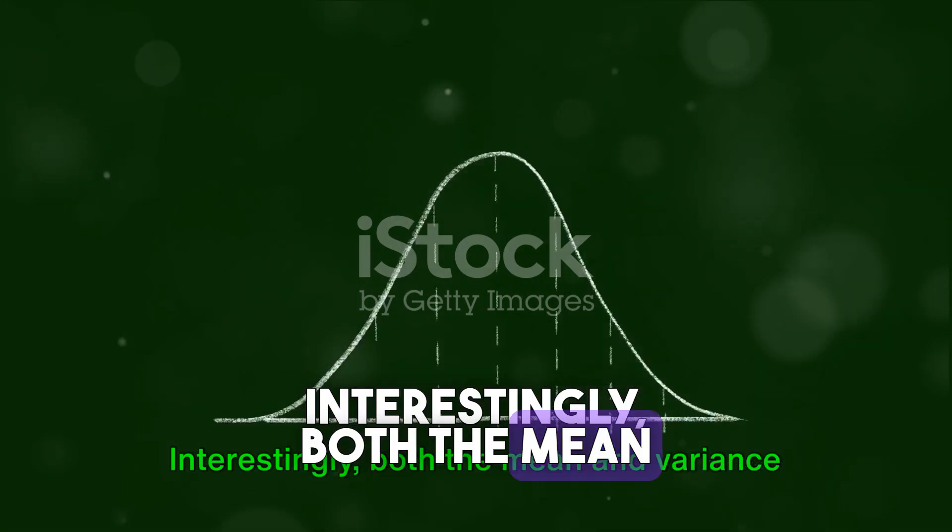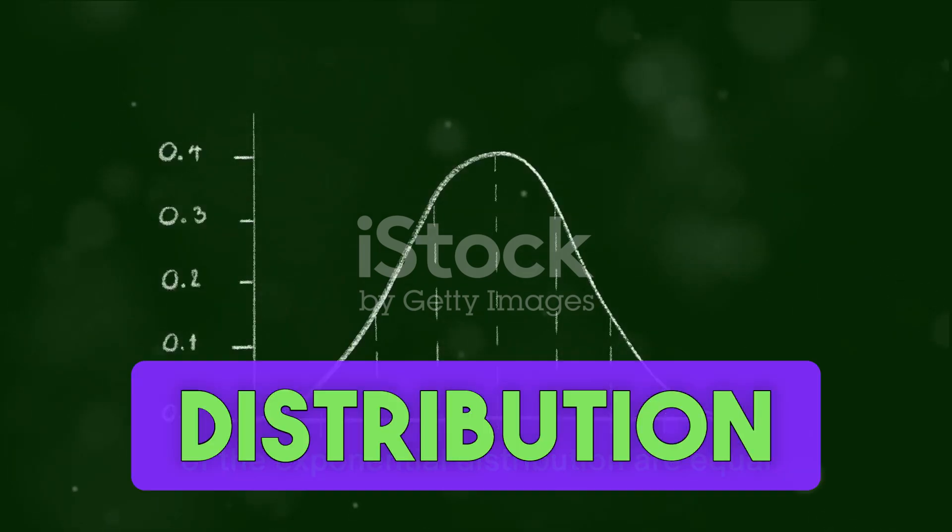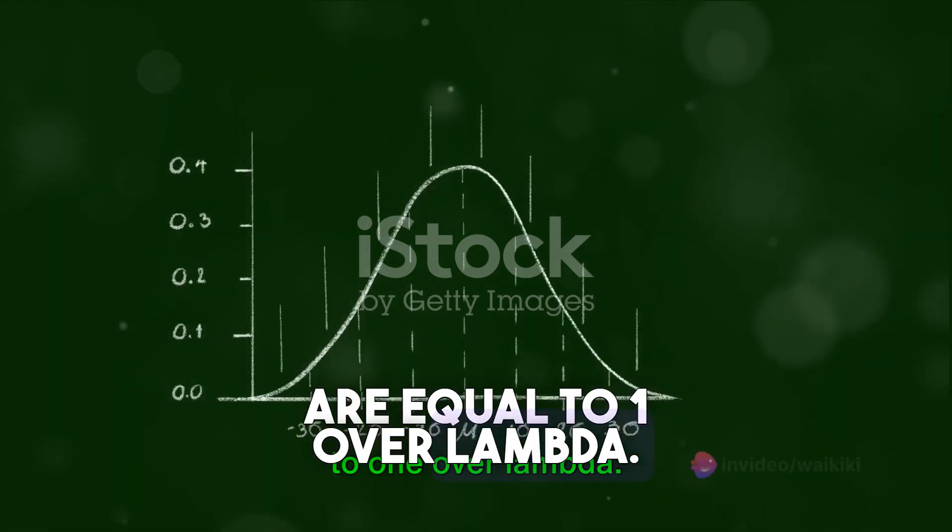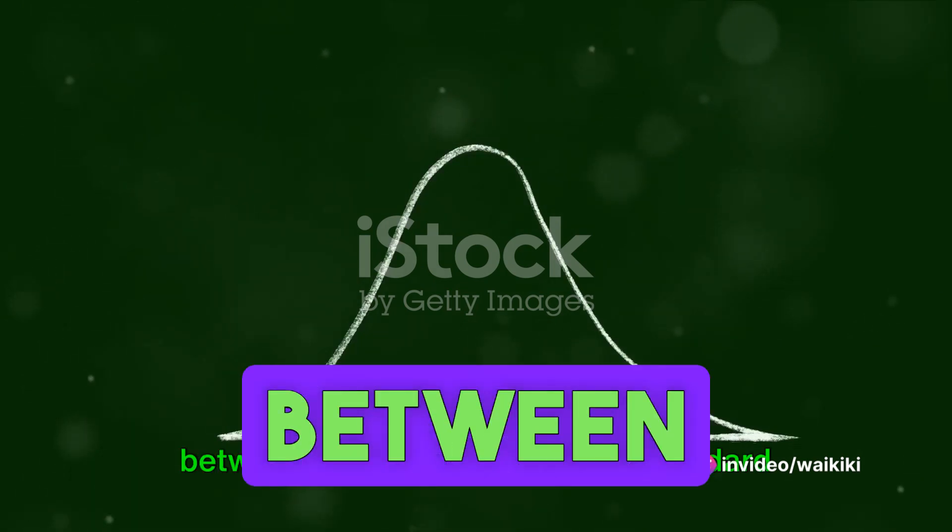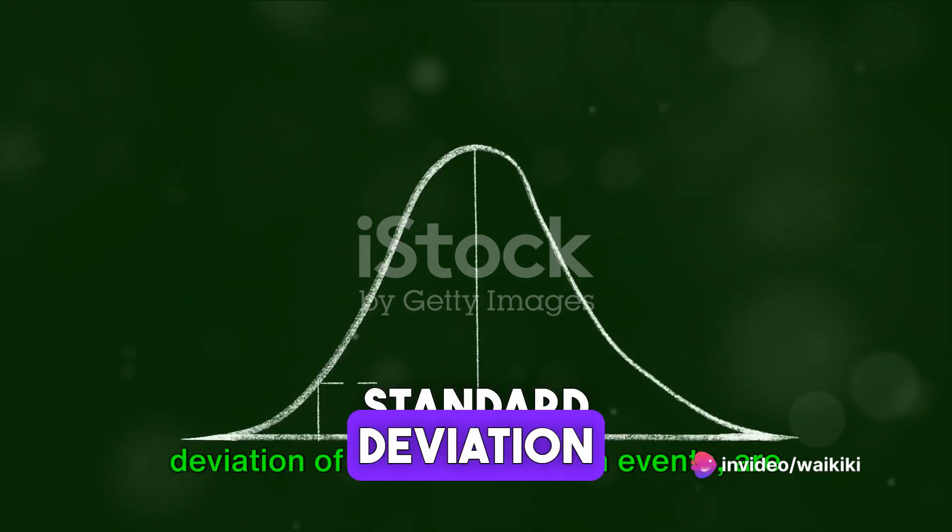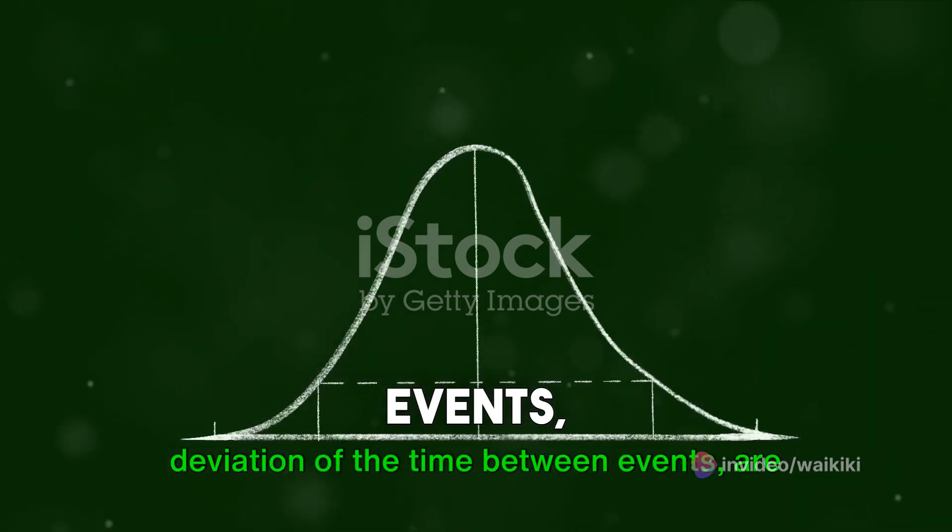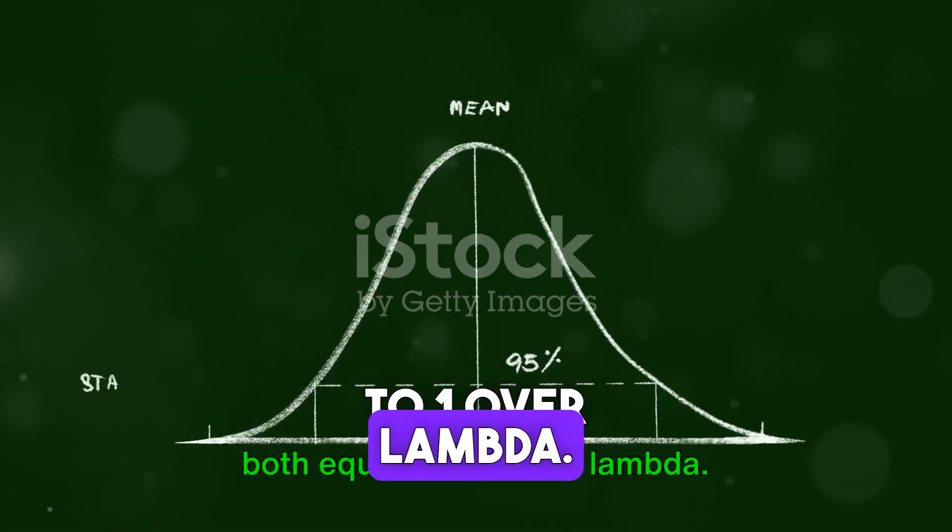Interestingly, both the mean and variance of the exponential distribution are equal to 1 over lambda. This implies that the average time between events, as well as the standard deviation of the time between events, are both equal to 1 over lambda.